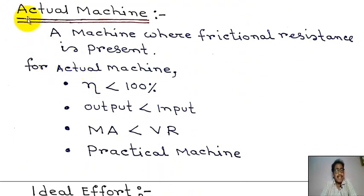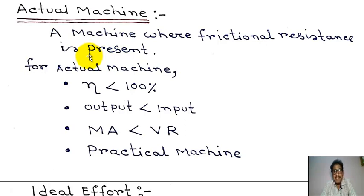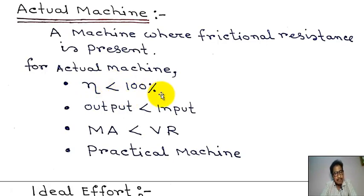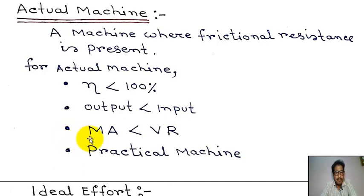Now, what is an actual machine? A machine where frictional resistance is present is called an actual machine. For actual machines, efficiency η is always less than 100%, output is always less than input, and mechanical advantage MA is less than velocity ratio VR.